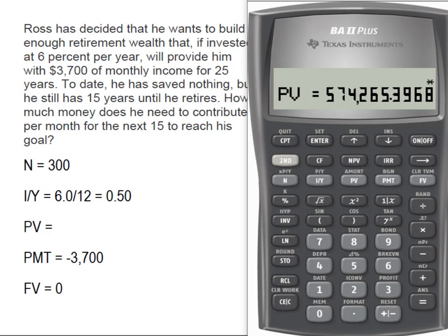So in order for him to be able to draw these 300 monthly payments of $3,700 each, he's going to need to have $574,265.40 in his retirement account.